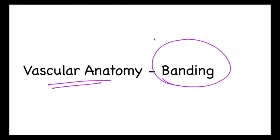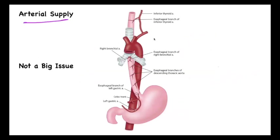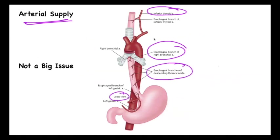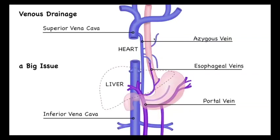Now we talk about vascular anatomy because we do a lot of banding. In terms of arterial supply, esophageal ulcer bleeding and ischemia are very rare because the esophagus receives blood supply from multiple vessels — thyroid branches, bronchial branches, aortic branches, and from the celiac trunk via the left gastric artery. Because it has so many supplies, ischemia is not a big problem. Our main concern is varices.